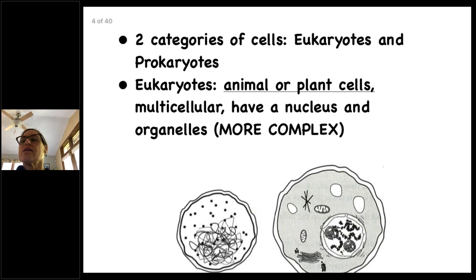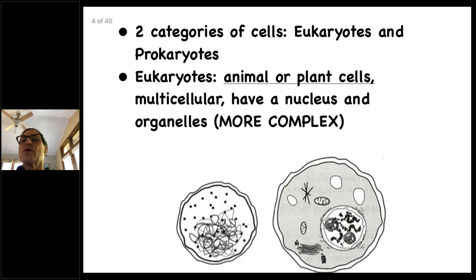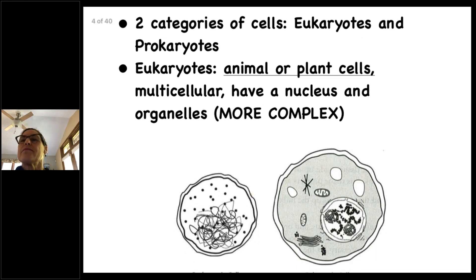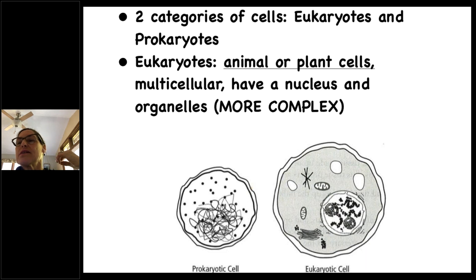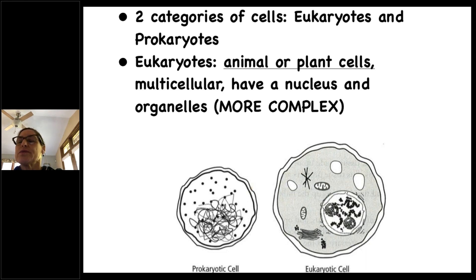There are two categories of cells: eukaryotes and prokaryotes. There's a picture of each at the bottom of the slide. Eukaryotes are animal or plant cells — they are multicellular, always existing in groups. They have a nucleus and organelles, and they're more complex. The nucleus is the large white blob with squiggles, and the organelles are all the other shapes with specific functions.